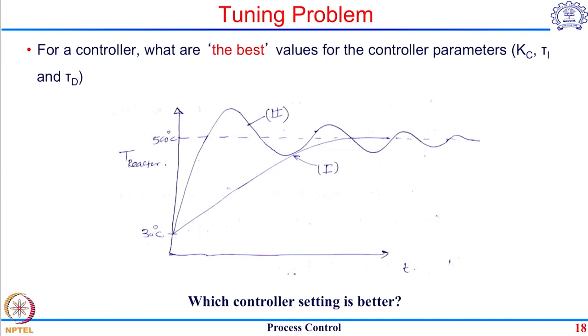What I am trying to drive at is that depending on the scenario and your requirements, either controller 1 or controller 2 can be the better option. There is no universal right or wrong — you are interested in defining certain criteria. If my criteria is that I want a very fast response irrespective of any overshoot, then controller 2 is better. But if I say I do not want any overshoot, then controller 1 is better. The selection of controller parameters heavily depends on what is my notion of a 'best response.' This is what we will use while developing tuning methodologies.